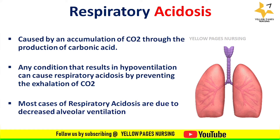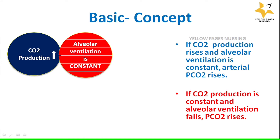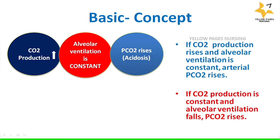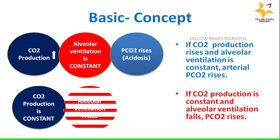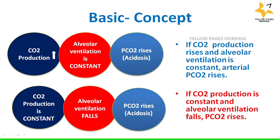Alveolar ventilation is defined as the volume of air entering and leaving the alveoli per minute. For a basic concept: if carbon dioxide production raises and alveolar ventilation is constant, then arterial PaCO2 raises. If carbon dioxide production is constant and alveolar ventilation fails, PaCO2 also raises. Alveolar ventilation is calculated by subtracting dead space ventilation from total minute ventilation.